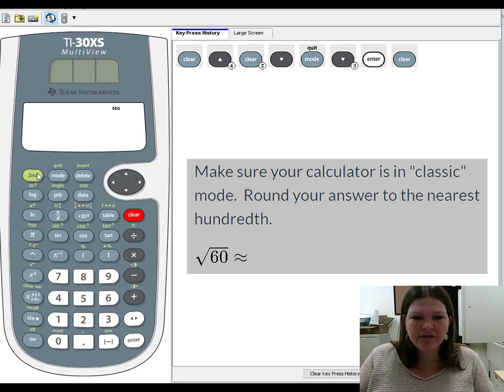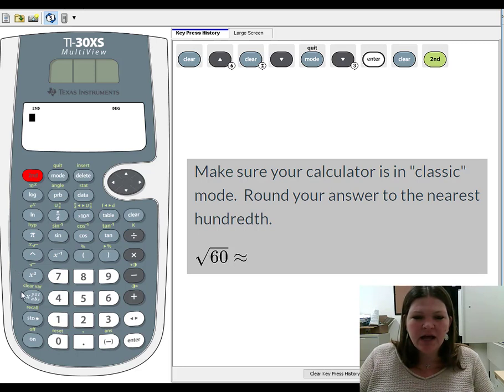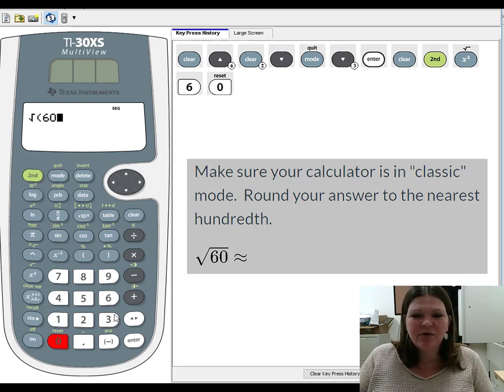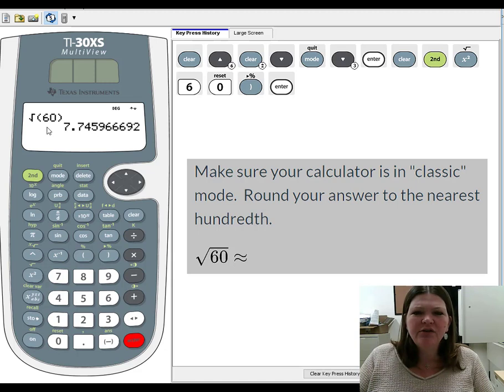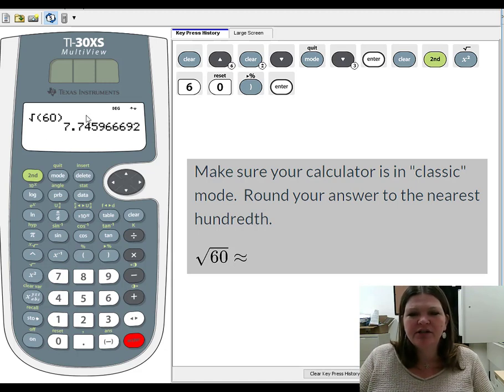So again, square root is in green. So you're going to want to hit the second button and then the square root. And then this time, notice it pops up with the parentheses. Looks a little weird, but that's okay. It's still a square root button. And it really doesn't matter if you leave the parentheses open or if you close it, but good practice. I'll close it and press enter. And you can see it goes straight to the decimal approximation. About 7.7.